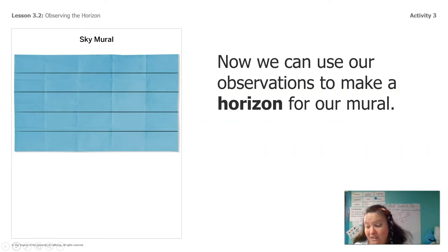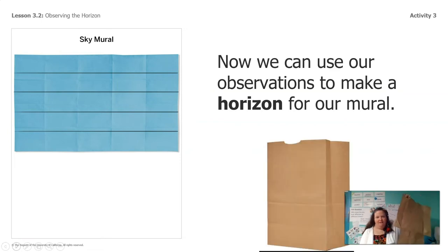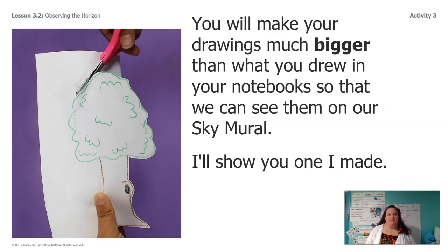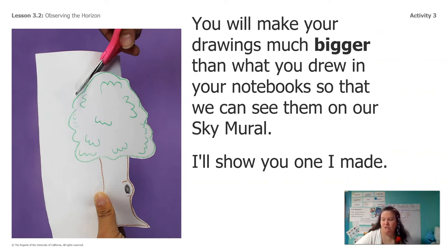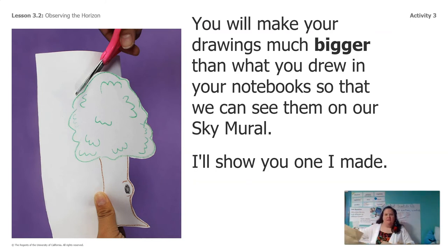Another choice is that you could make your own sky mural at home using a paper sack — just a paper sack like you get at the grocery store. You can have a grown-up cut it out for you, and then you have a nice long strip and you could draw your horizon right on it. You have lots of choices for how to do your own sky mural. Once you get your observations done, you're going to want to make your drawings much bigger than you drew them the first time so you can see them really clearly on your sky mural.